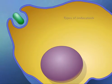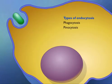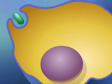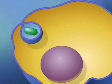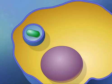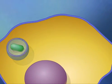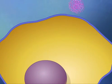Cells use three major types of endocytosis: phagocytosis, pinocytosis, and receptor-mediated endocytosis. If the material the cell takes in is particulate, such as a bacterium or a fragment of organic matter, the process is called phagocytosis. If the material the cell takes in is liquid, it is called pinocytosis.